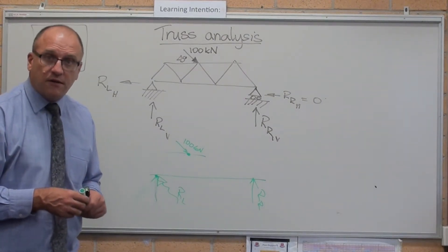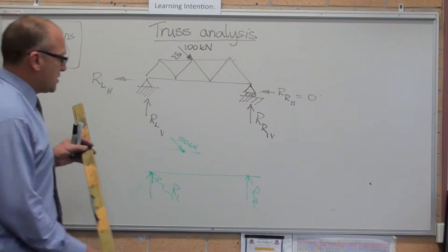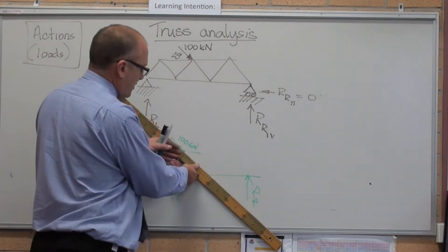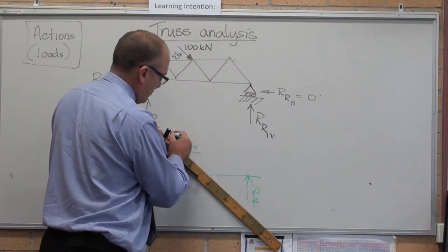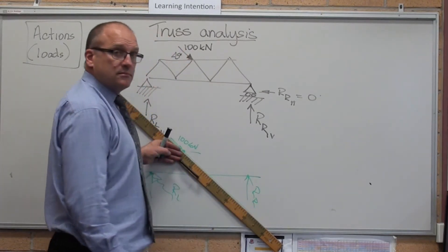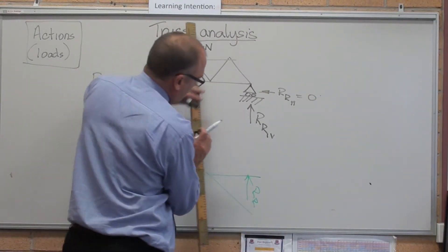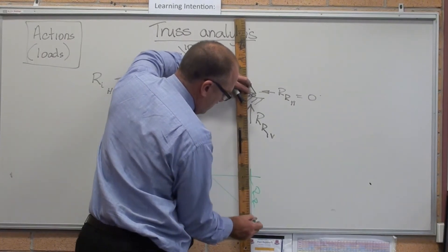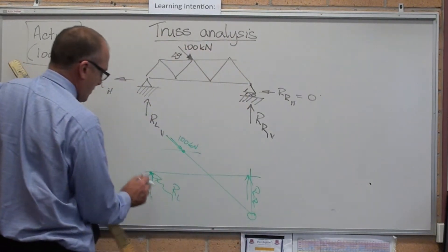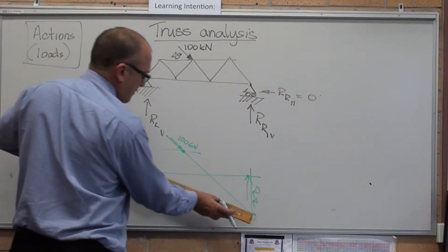You can solve this one graphically. This is not difficult to solve graphically. Force one must run that way. Force two must be vertical. Force three must pass through there and through there.